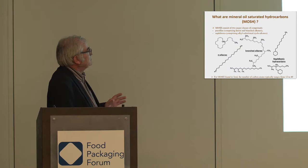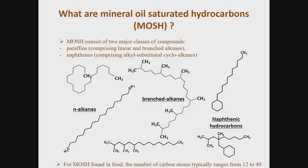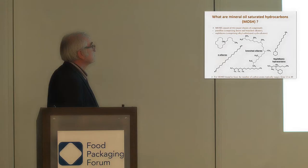We have two major classes of compounds in these mixtures. The first is what we call paraffins or alkanes, with linear alkanes and branched alkanes. The second group is the naphthenes, which are naphthenic hydrocarbons having a ring and a chain which can be branched or linear.